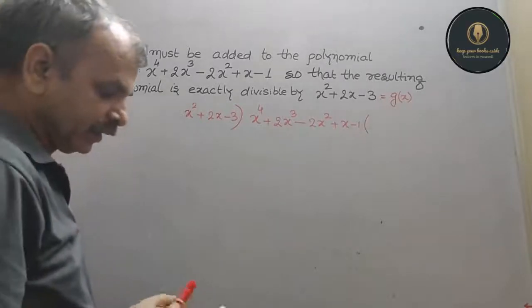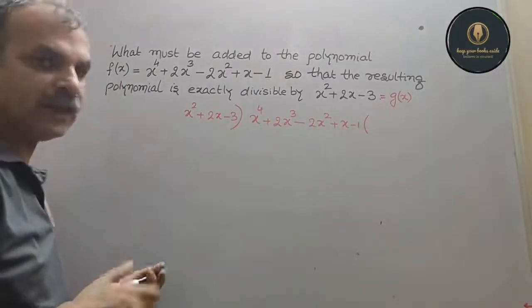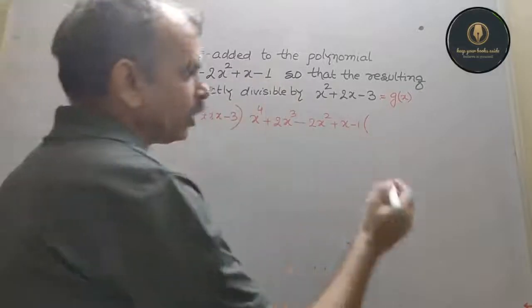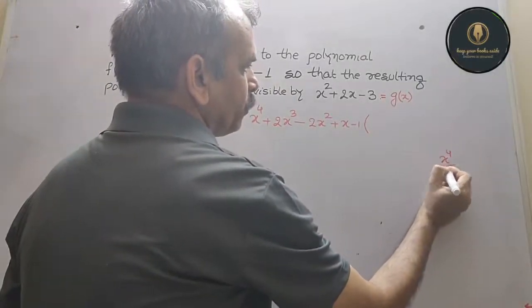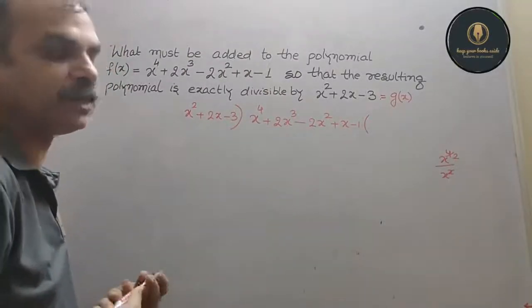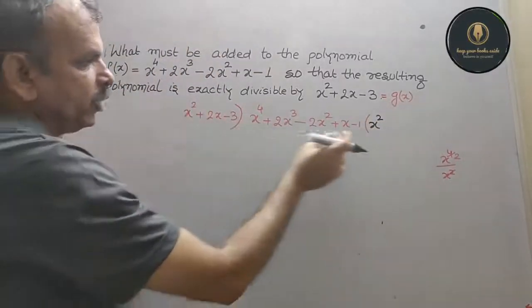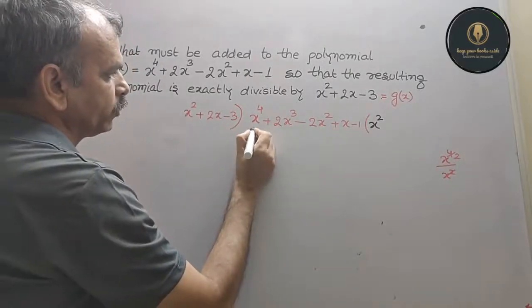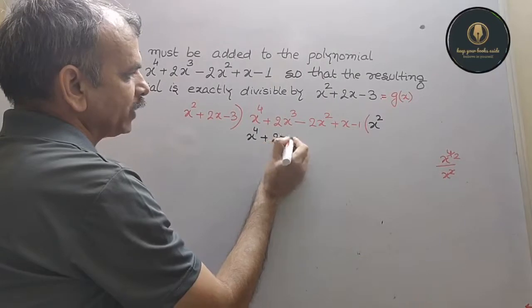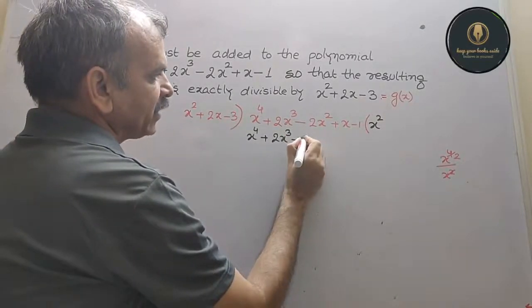Now we divide. The first term: x⁴ divided by x² gives x². So the quotient starts with x². Then x² times (x² + 2x - 3) gives x⁴ + 2x³ - 3x².